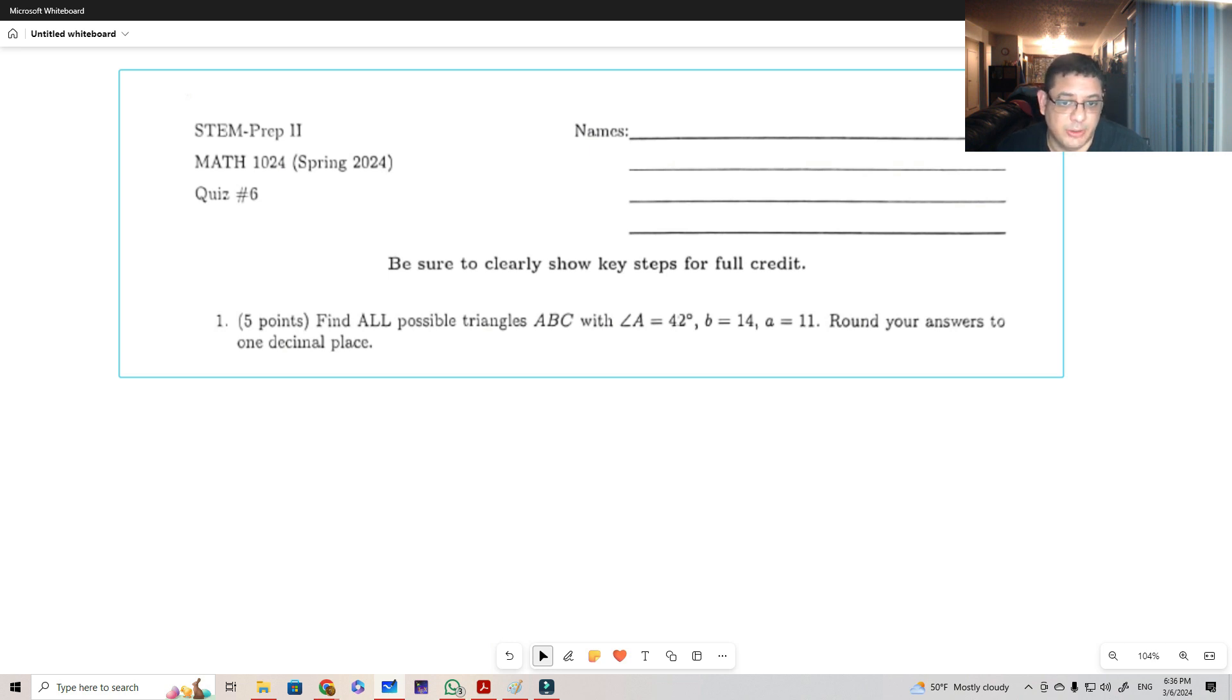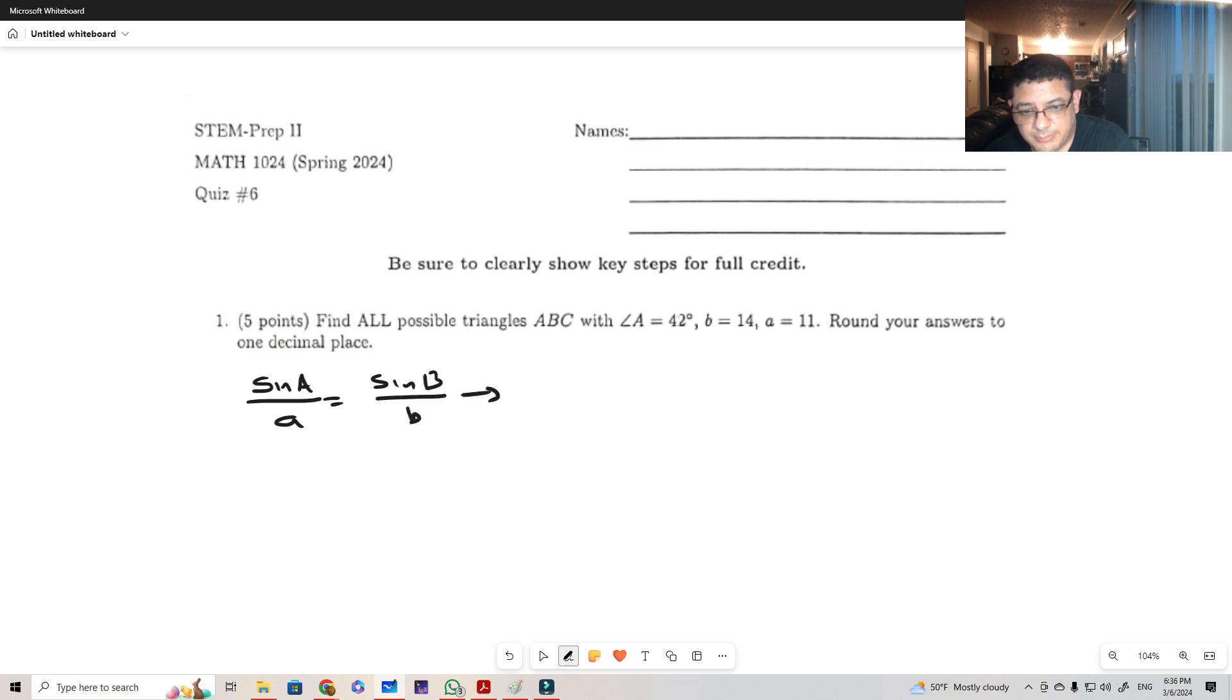If I'm going to consider the law of sines, I can do sine of A over a equals sine of B over b. So that means that sine of B over 14 equals sine of 42 over 11. From this, I can solve the equation and sine of B is just going to be 14 over 11 sine of 42.